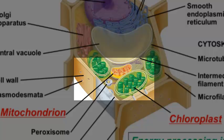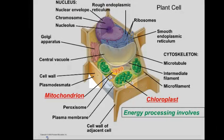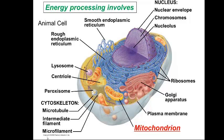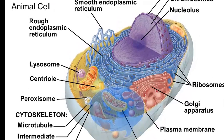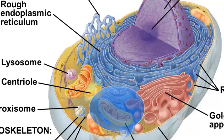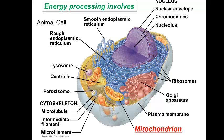Chloroplasts are photosynthesizing organelles. Photosynthesis is the reaction that converts sunlight energy to chemical energy — it's the process of making chemical bonds in a molecule like sugar. Here we see an animal cell with its mitochondria. Plant cells have both chloroplasts and mitochondria, where animal cells only have mitochondria.